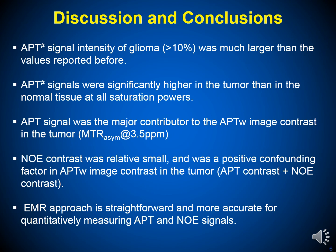In this study, we found that the APT# signal intensity of glioma was much larger than reference values, up to 10%. APT# signals were significantly higher in tumor than in normal tissues across all saturation powers. We also found that the APT signal was the major contributor to APT-weighted image contrasts in tumors.